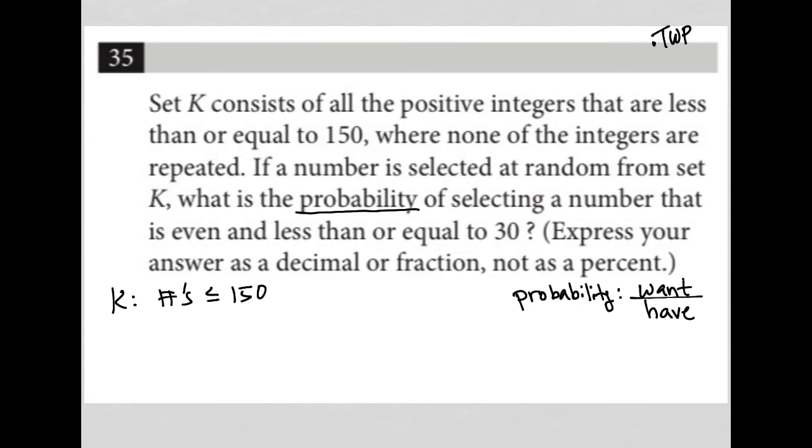So how many numbers do I have that are even and less than or equal to 30? Well, I have 2, 4, 6, 8, 10, 12, 14, 16, 18, 20, 22, 24, 26, 28, less than or equal to, so 30.